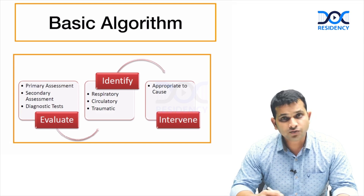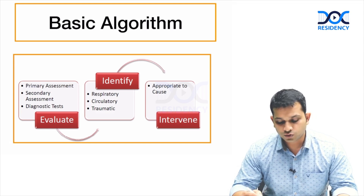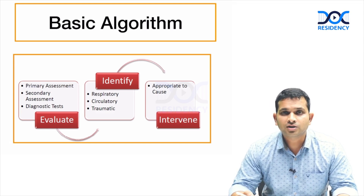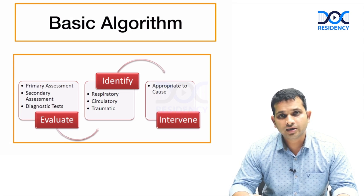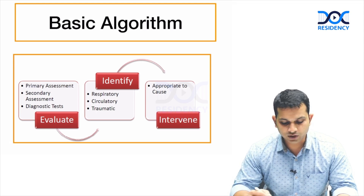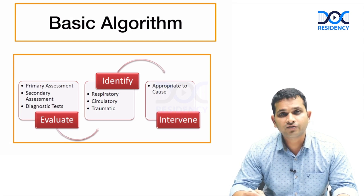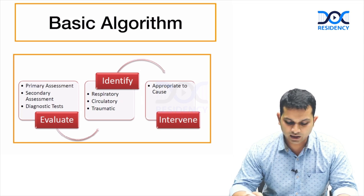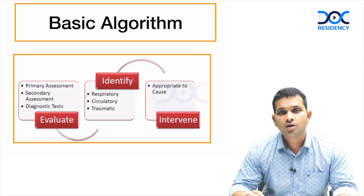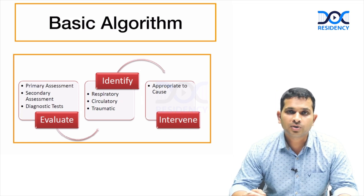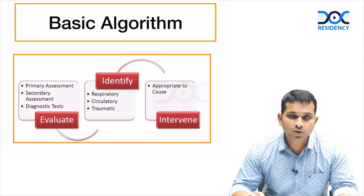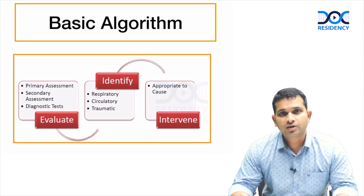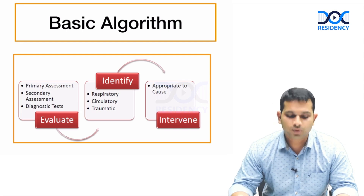Once we identify the problem, we move to the next step — intervention — and start some kind of treatment. So: evaluation, then identification of which system we are dealing with — respiratory, circulatory, or abdominal — and then we start our intervention depending upon the cause.